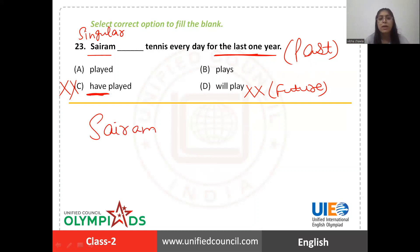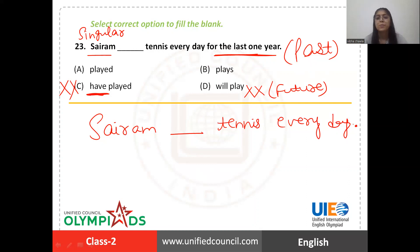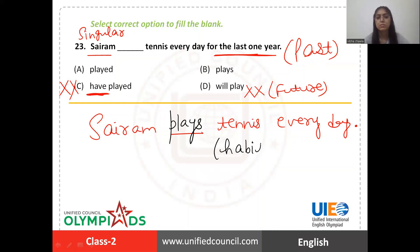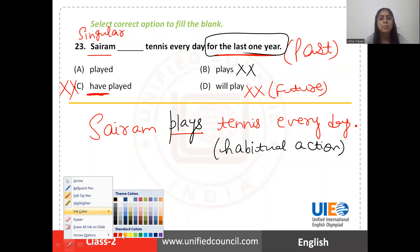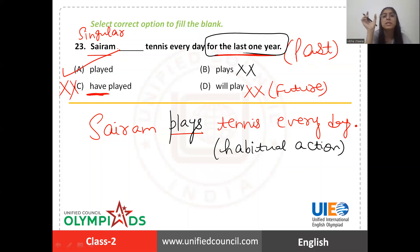If the question was only Sirem blank tennis every day, then plays could be the right answer because it shows habitual action. But the hint for the last one year shows that Sirem was engaged in playing tennis every day over the past one year — it indicates past. That's why the answer can't be plays; it will be played. The right answer is option A.